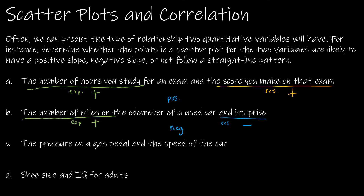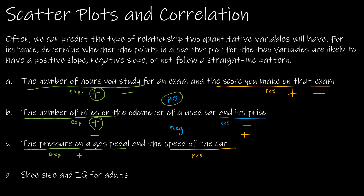For a positive slope, as the number of hours decrease, the score I make on the exam also decreases — both directions are the same. Whereas for a negative slope, both directions should be different: as the number of miles decrease, you will have to pay more for the car. For scenario C — the pressure on a gas pedal and the speed of the car — pressure is explanatory and speed is response. As I put more pressure on the gas pedal, the speed of the car increases, so this is a positive correlation.